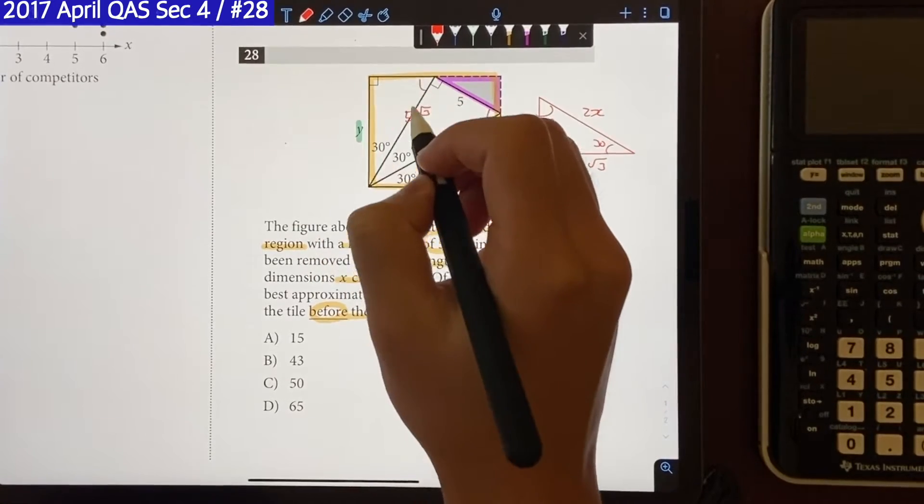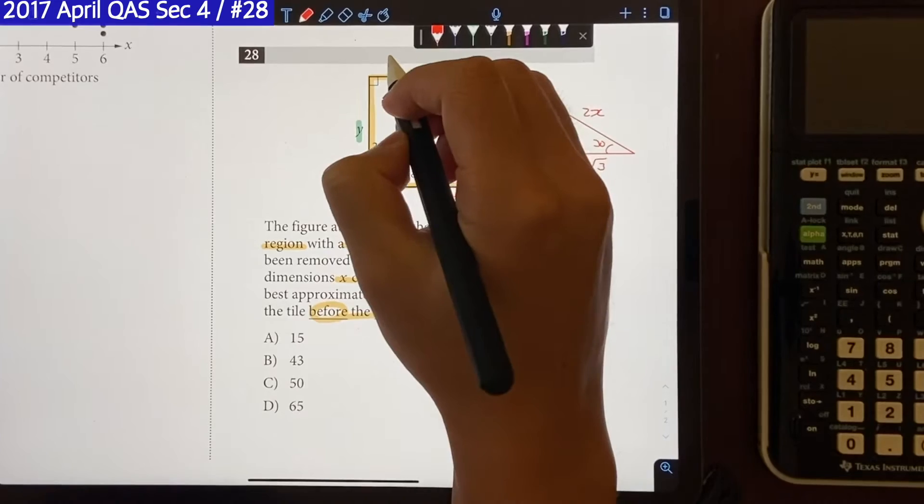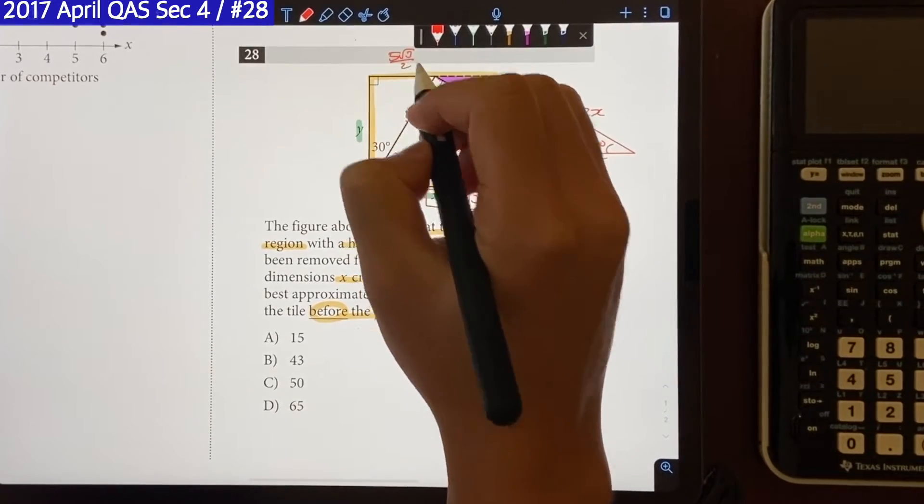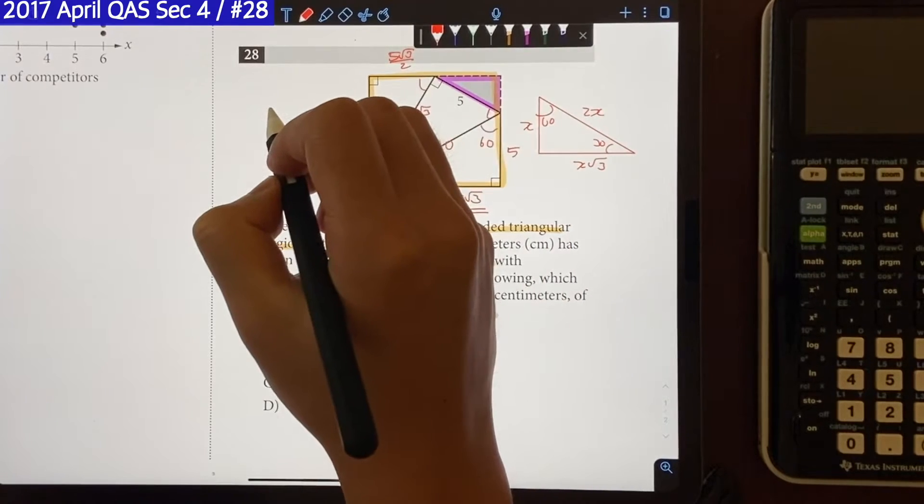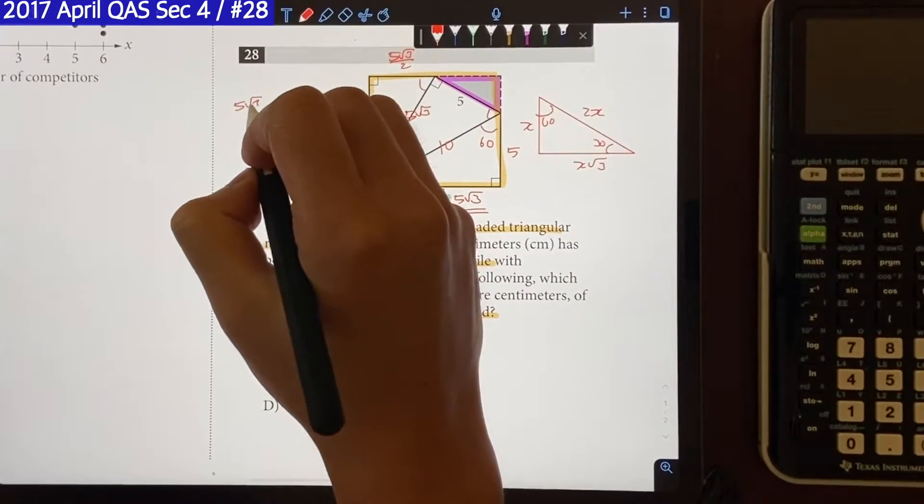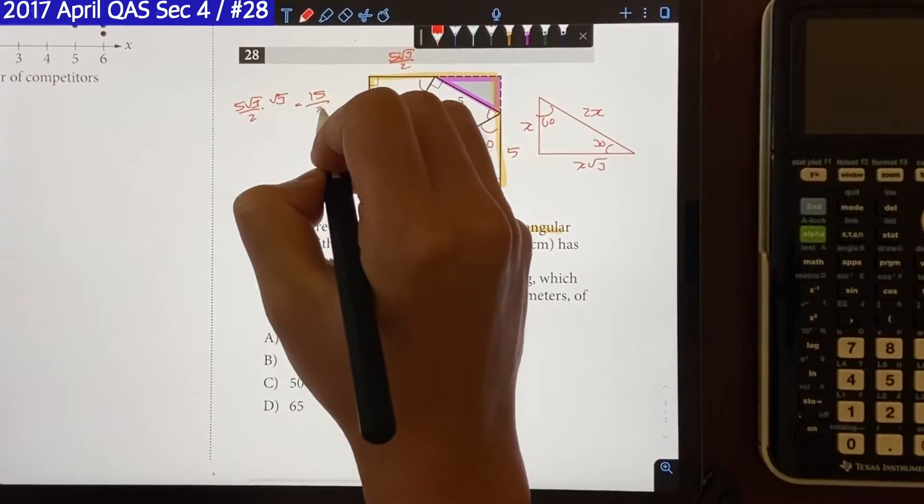And looking at this triangle, if the hypotenuse is 5√3, that means the side opposite from 30 will be just 5√3 over 2. And this side is going to be 5√3 over 2 times √3, which will become 5√3 over 2 times √3, which is going to be 15 over 2.